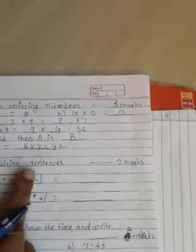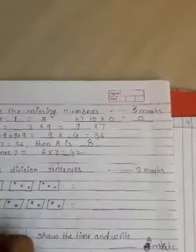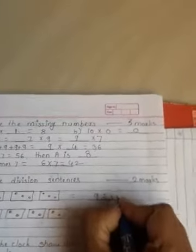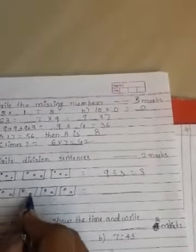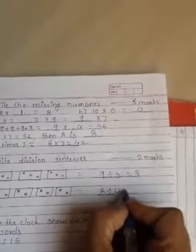Write division sentences. How many dots are there? One, two, three, four, five, six, seven, eight, nine. How many columns? Three. How many in each column? Three threes equal nine. Next, one through eight dots, eight divided by four equals two. Understand?